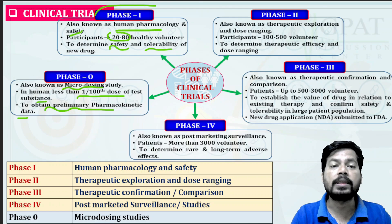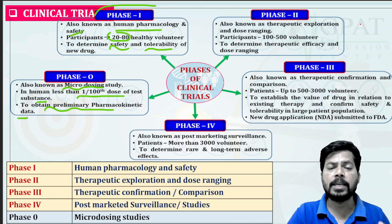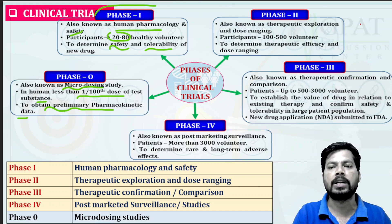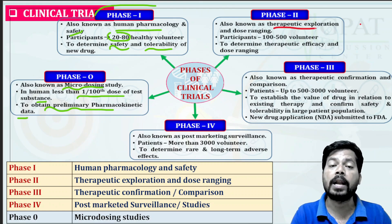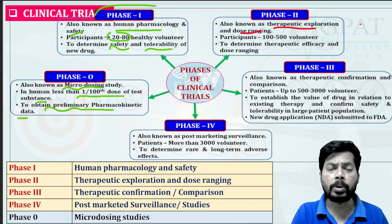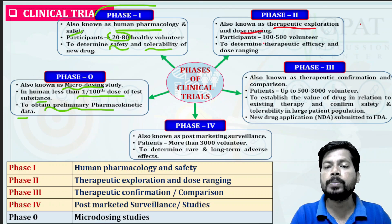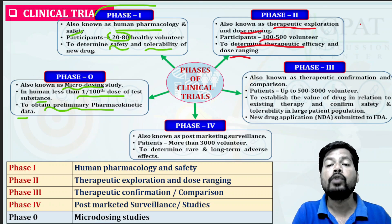Phase Two is mainly for therapeutic exploration. For example, an ACE inhibitor like captopril decreases hypertension — Phase Two explores the specific mechanism and at what particular dose it is effective. We explore the therapeutic range, especially in the form of dose range, performing a dose-response curve using doses like 0.1, 0.2, 0.4, 0.8, and 1.6 to observe the response. Participants are 100 to 500 volunteers, and the aim is to determine therapeutic efficacy and pharmacological action at different doses.